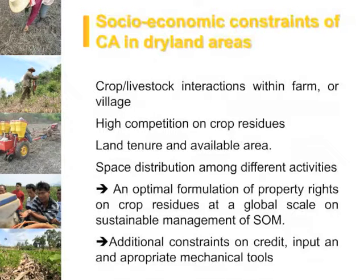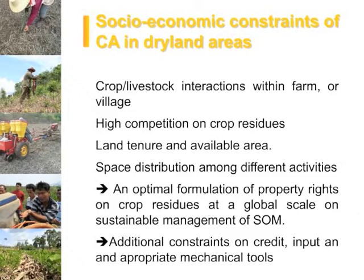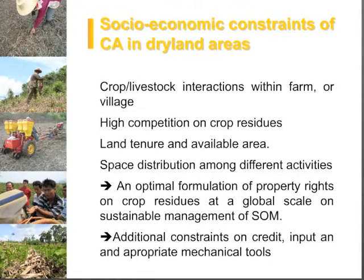According to socio-economic constraints, we mention the crop-livestock interactions within the farm and the village, the high competition on crop residues, land tenure and available area in the village, and also space distribution among different activities which may sometimes not be very clear. All of these make it clear that optimal formulation of property rights on crop residues at a global scale is needed. Additional constraints include access to credits, to inputs, and to appropriate mechanical tools.